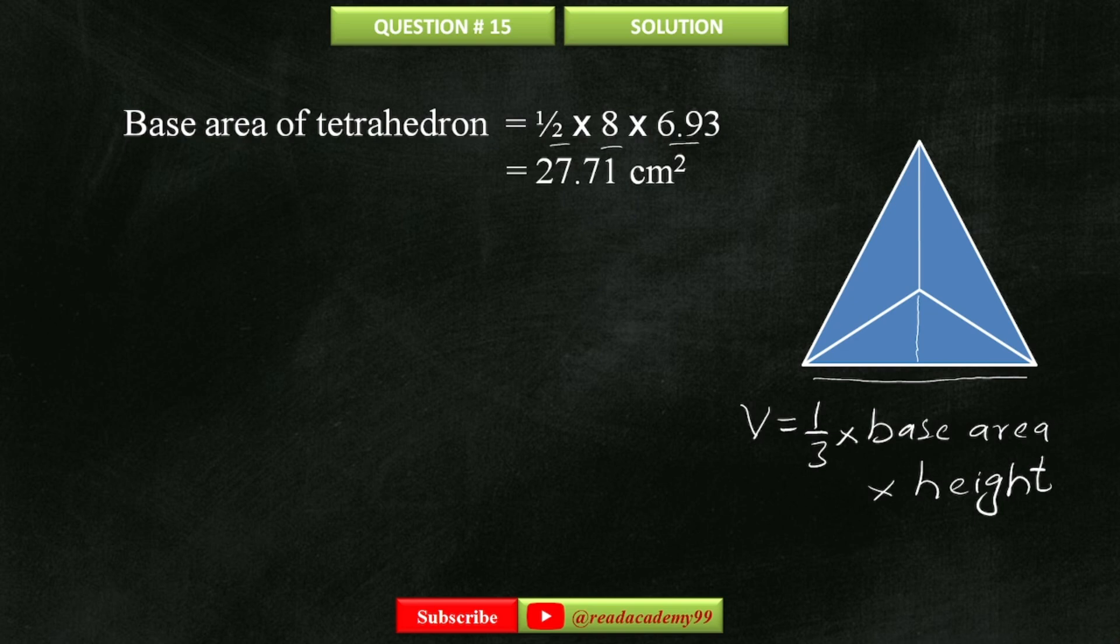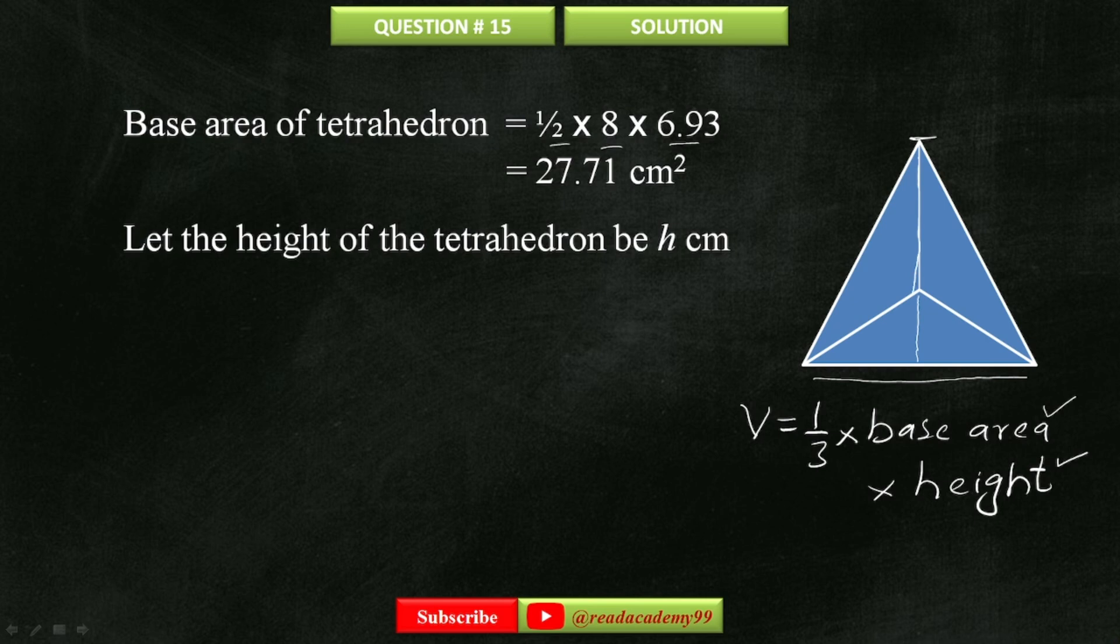Now I'm going to find the height of the tetrahedron, which is the distance from this point to the center of this triangle. If we join this line here, again you can see that a triangle is formed here.